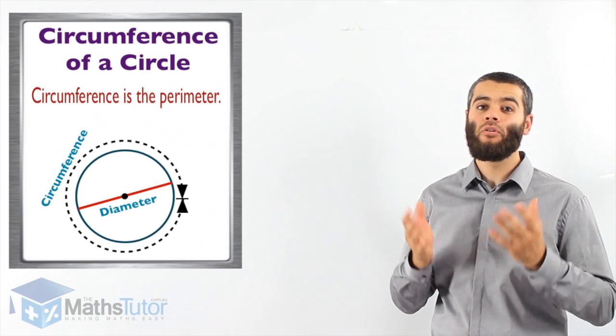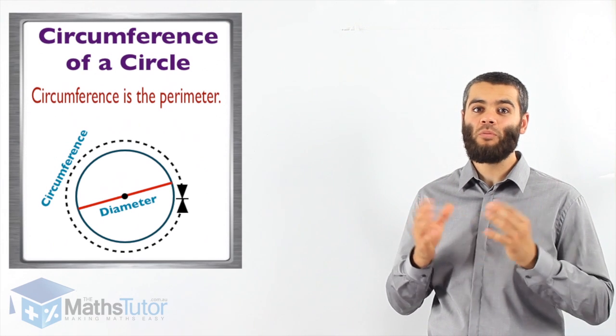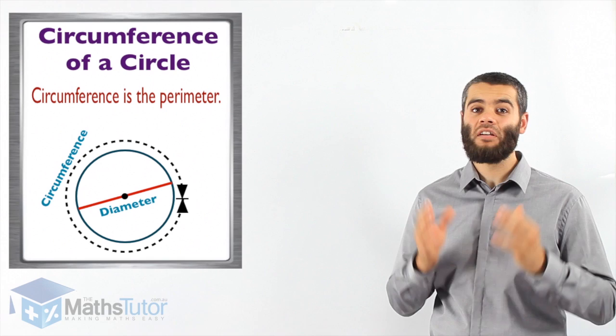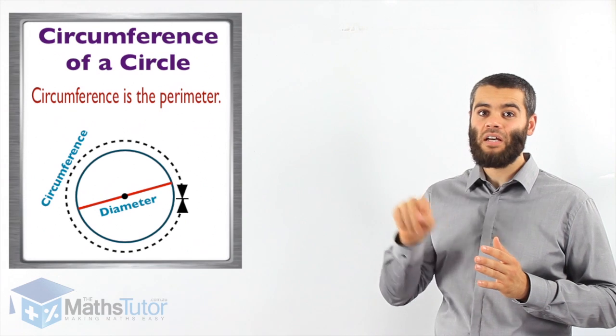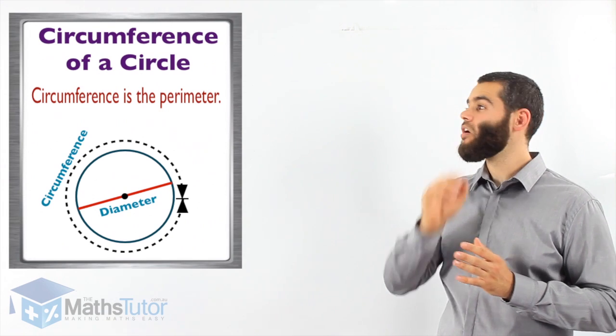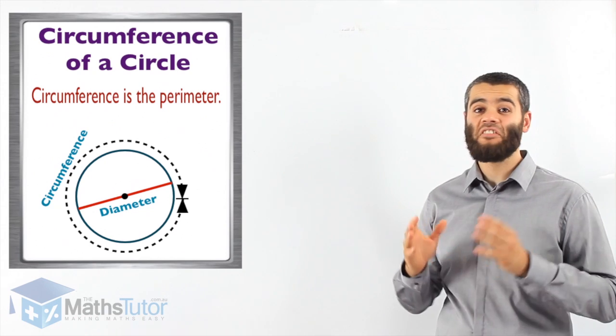It is the perimeter of the circle. When we're dealing with circles, we call it the circumference. So remember, the circumference is the perimeter, it is the outside of the circle, and it has a special formula.